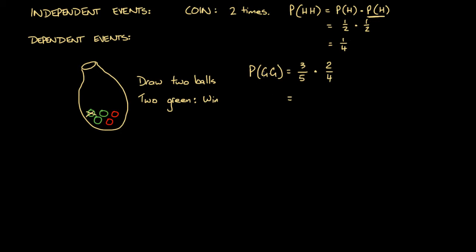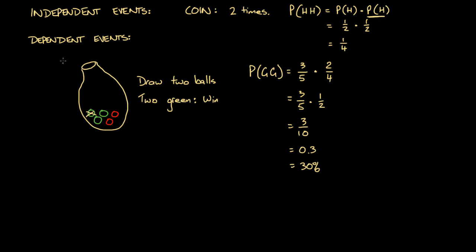So the probability of picking two green balls is three over five times two over four. Two over four is the same as a half, so this is three over five multiplied by a half, which gives us three over ten. In decimal that's 0.3, or 30%. In other words, if you repeated this game many times, 30% of the time you would expect to pull two green balls out of the bag.